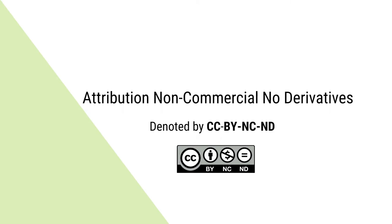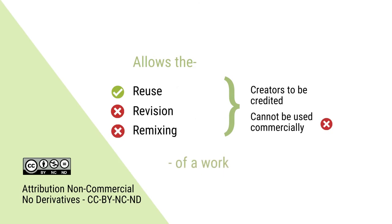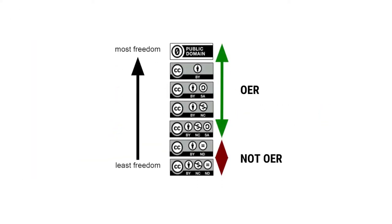Attribution Non-Commercial Non-Derivative, denoted by CC BY NC ND. Of all the CC licenses, this is the strictest. It allows the user to share the content only if the user acknowledges the creator, uses it in a non-commercial manner, and makes no changes to the original form. You will see in the image given here how the different licenses allow the content to be open educational resources.